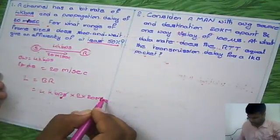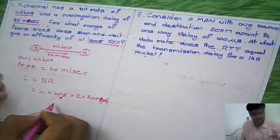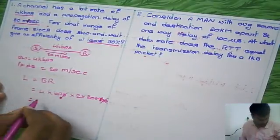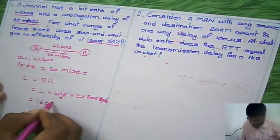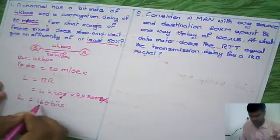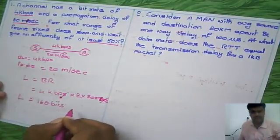These seconds and these seconds we can cancel. So after solving this, we will get 160 bits. So length of the packet is 160 bits. This is how we are going to solve this.